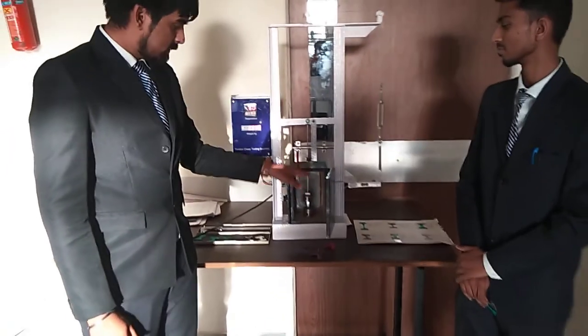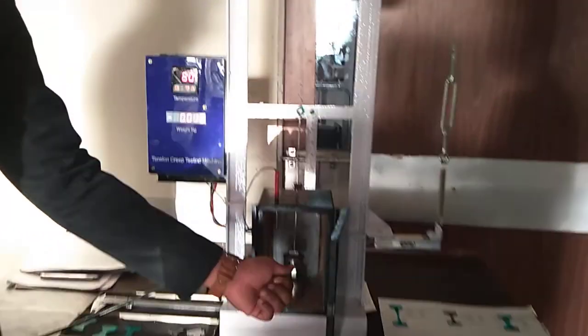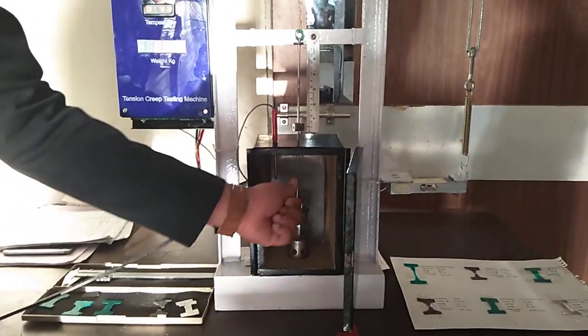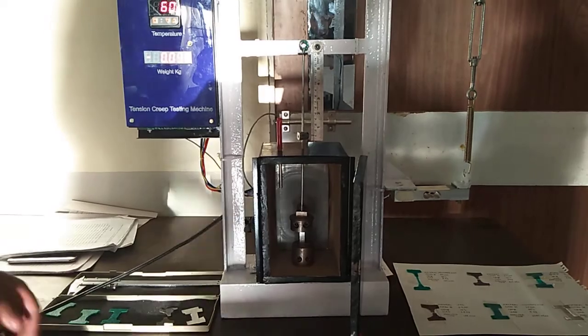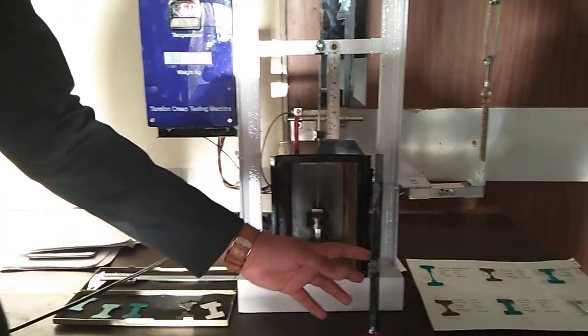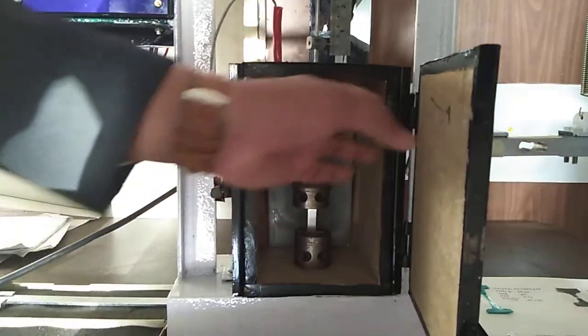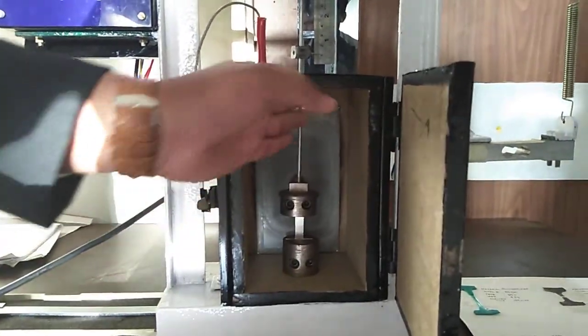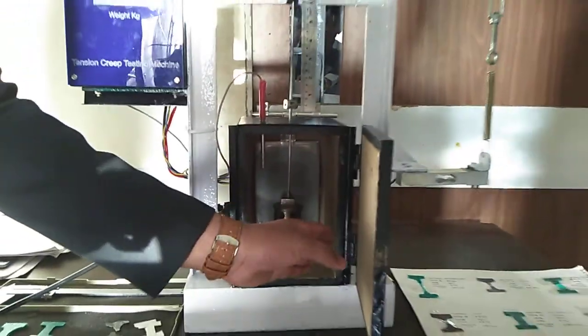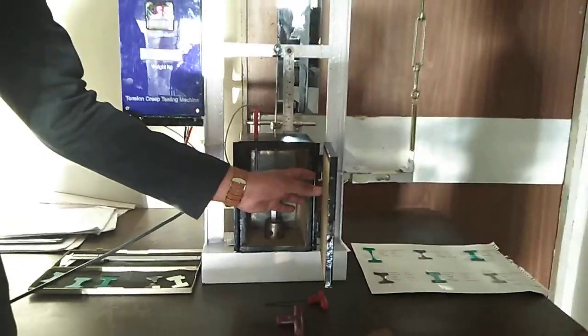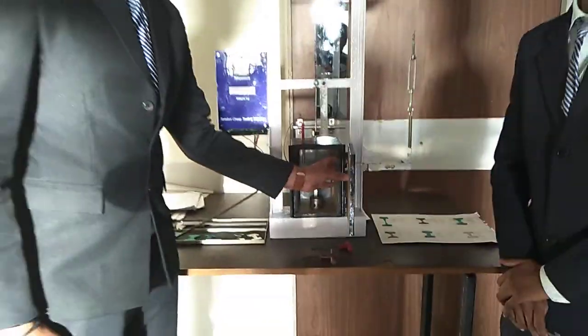As you can see from this apparatus, it consists of a furnace. Inside the furnace there are two grips which consist of hot pull rods. Between the two grips, the specimen is mounted. The inner portion, the inner surface, is insulated by bushing sheet.